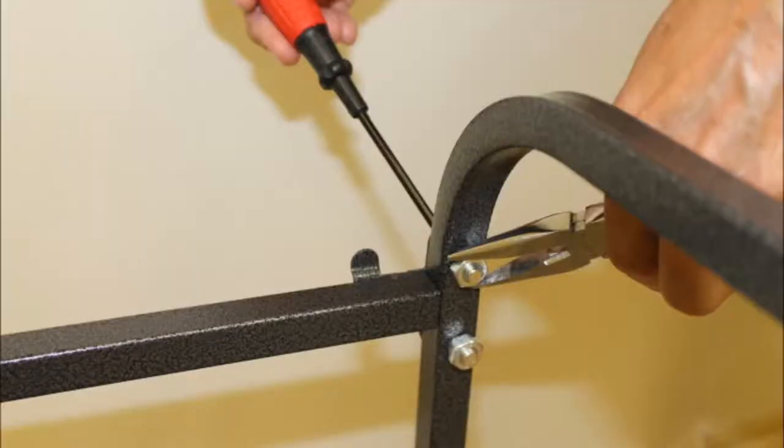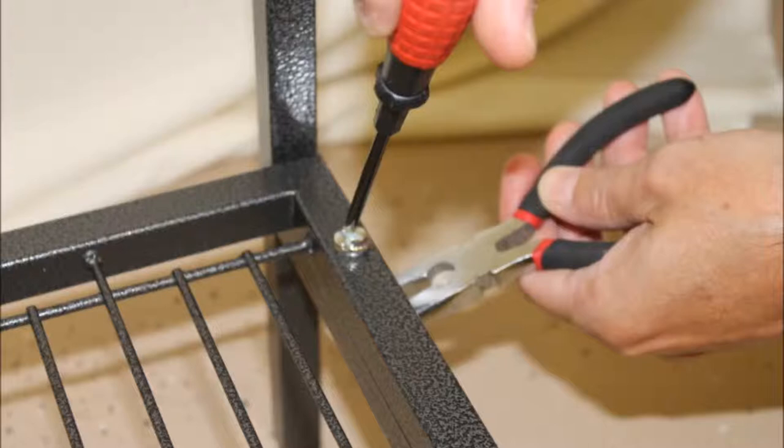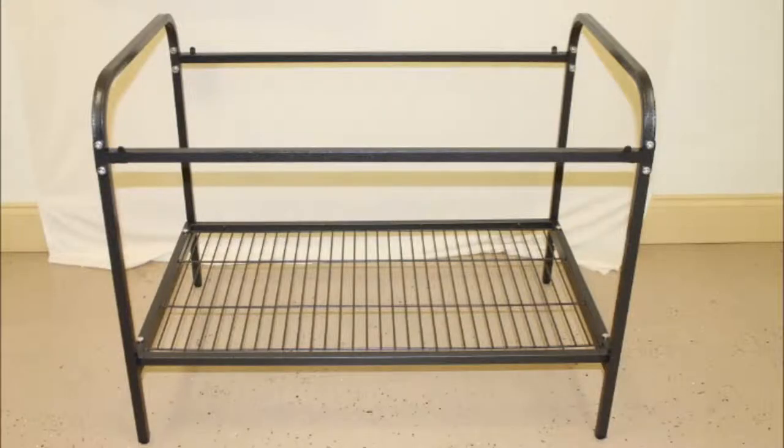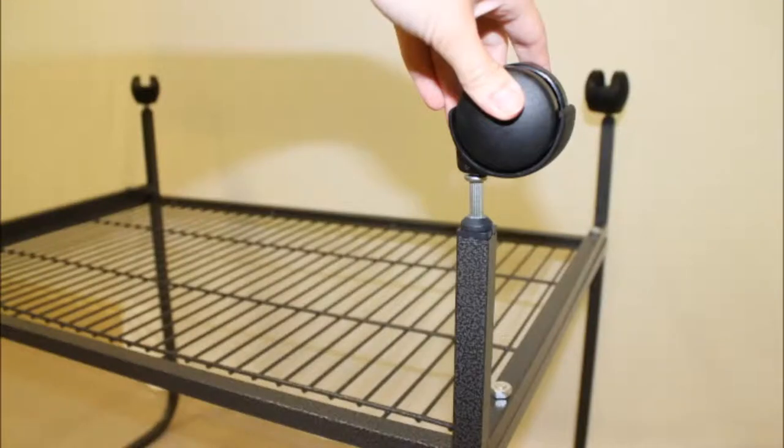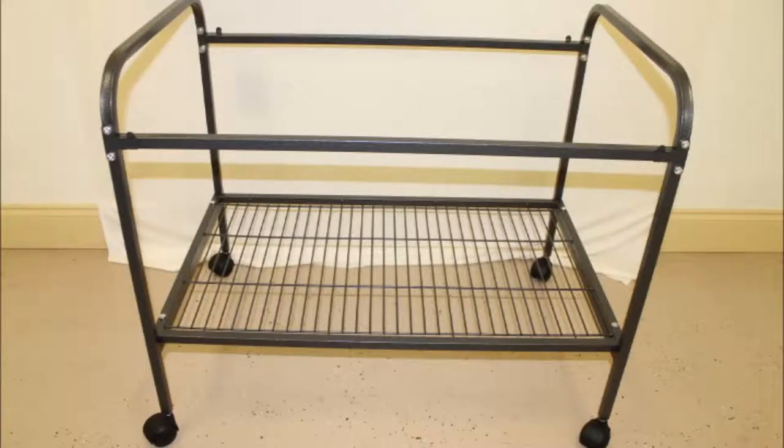You can now tighten all these screws and nuts on the cage stand with a screwdriver and pliers. Now that the stand is put together, you can leave it how it is or add wheels to make it mobile. Flip the stand over and push the four wheels into the bottom of the stand legs and your cage stand with the shelf is now complete.